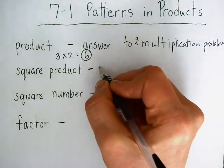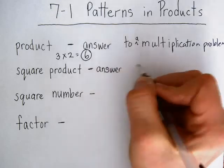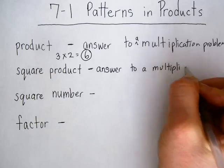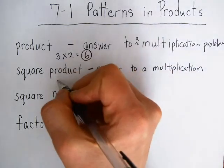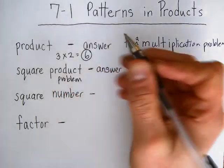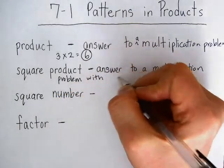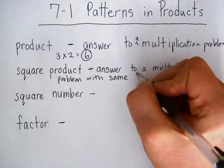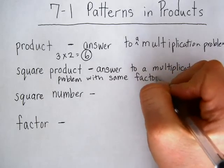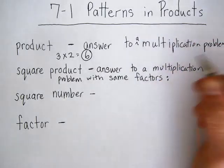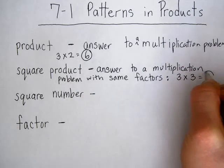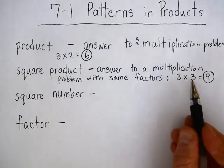A square product is the answer to a multiplication problem where the factors are the same. So for example, 3 times 3 equals 9. So 9 is a square product, because the same number was multiplied by itself to get that.